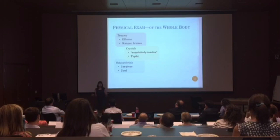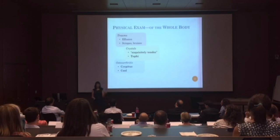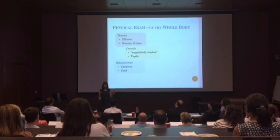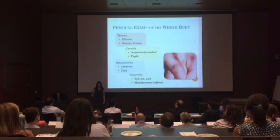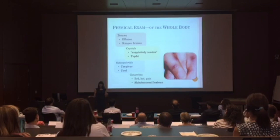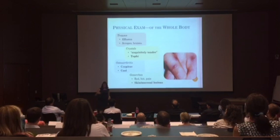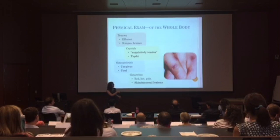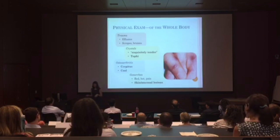Osteoarthritis doesn't have many systemic manifestations. The knee itself should be cool because it's not an inflammatory process. If you move the joint around, you're likely to feel it crackling and popping — this is called crepitus. For gonorrhea, the knee itself will be red, hot, and painful. You might also look at the oral and genital mucosa for lesions or signs of infection. And if you look at the rest of the body, you might see signs of disseminating gonococcal infection — a rash with painful hemorrhagic pustules, especially on the hands or feet.